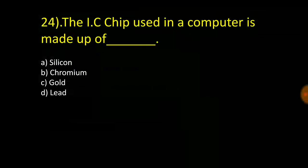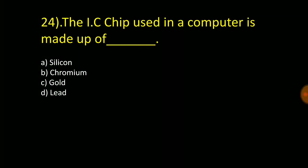The IC chip used in a computer is made up of: silicon, chromium, gold, or lead. And it is silicon.